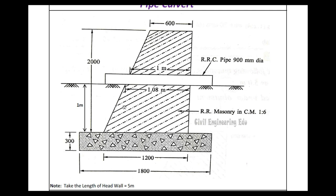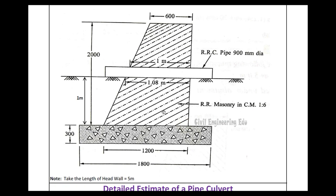The pipe is arranged within the RR masonry. The bottom side dimension is 1.08 meters and the top side is 1 meter. The top width of masonry is given as 600 mm and the bottom width is given as 1200 mm.